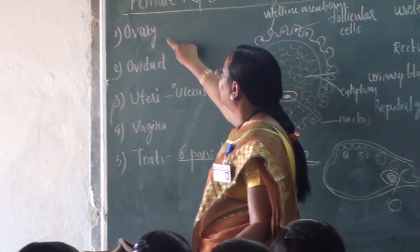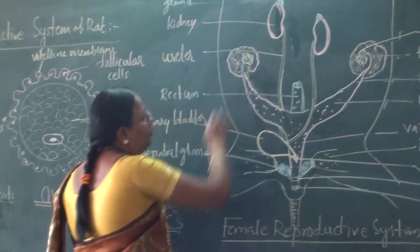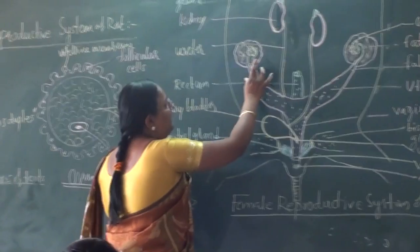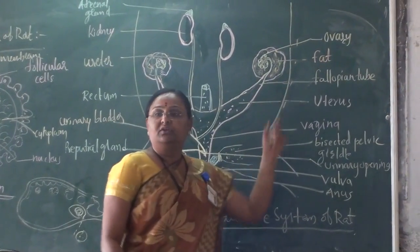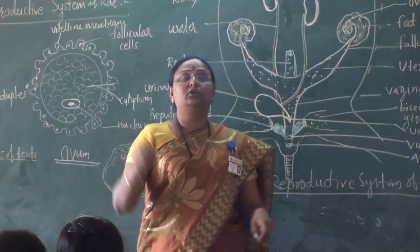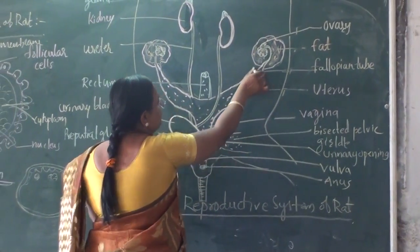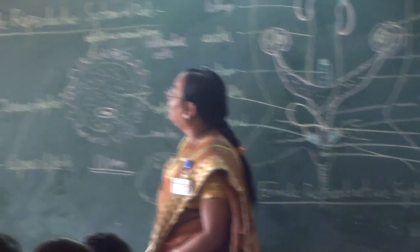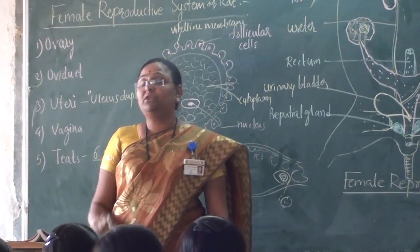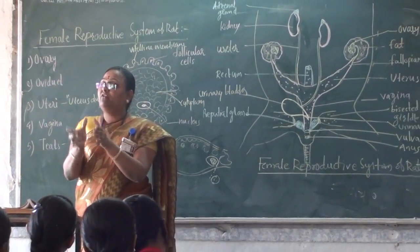After that, the ova communicates with the oviduct. The oviduct receives the ova. The ova passes through the oviduct, which is called the broad pipe of the oviduct. Both oviducts are combined with each other forming a common passage.